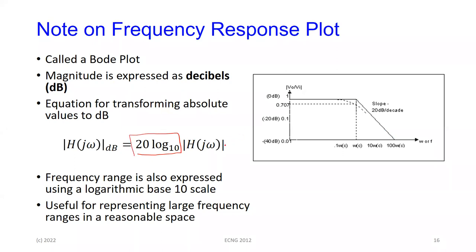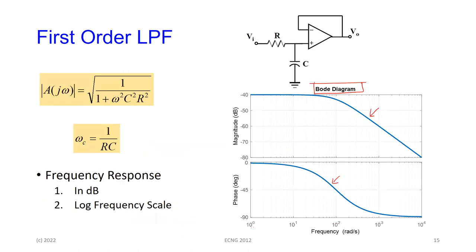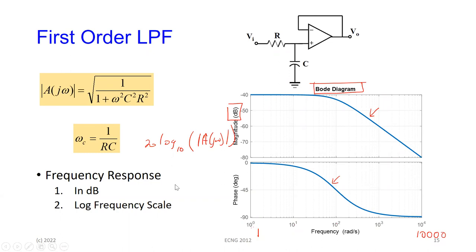We use decibels because — as we mentioned when discussing common mode rejection ratio — you can express very large variations with smaller numbers. We use a log scale for frequency because in a fairly small diagram we're moving from one radian per second to ten thousand; on a linear scale the diagram would have to be enormous and you wouldn't get the detail. So the frequency response uses decibels: 20 log base 10 of the magnitude |A(jω)|.